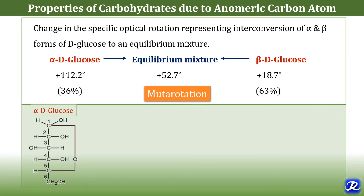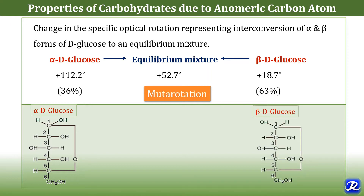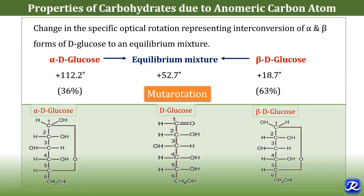Why does mutarotation occur? Mutarotation occurs because D-glucose has two anomers — alpha and beta — produced by spatial configuration with reference to the first carbon atom in glucose. Alpha D-glucose has a specific rotation of +112 degrees and beta D-glucose has a specific rotation of about 18.7 degrees. Both undergo mutarotation and at equilibrium, one-third of molecules are of alpha type (36%) and two-thirds are of beta type (63%), giving a specific rotation of +52.7 degrees at equilibrium.